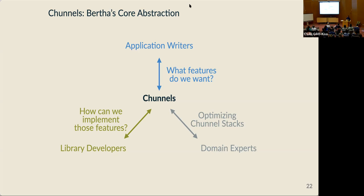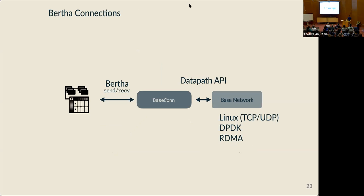To see how channels work, let's start with the simplest possible building block in Bertha: a base connection with no fancy features. Examples might be the Linux kernel networking stack, or one based on DPDK or RDMA. The application calls send and receive — Bertha's connection API — on this base connection, and then the base connection shims calls to the underlying data path APIs.